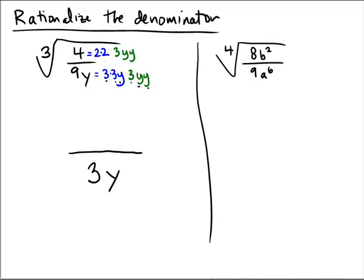In the top, you have a cube root, and inside of the cube root, you have a 2 times a 2 times a 3, 4 times 3 is 12, and two copies of y.